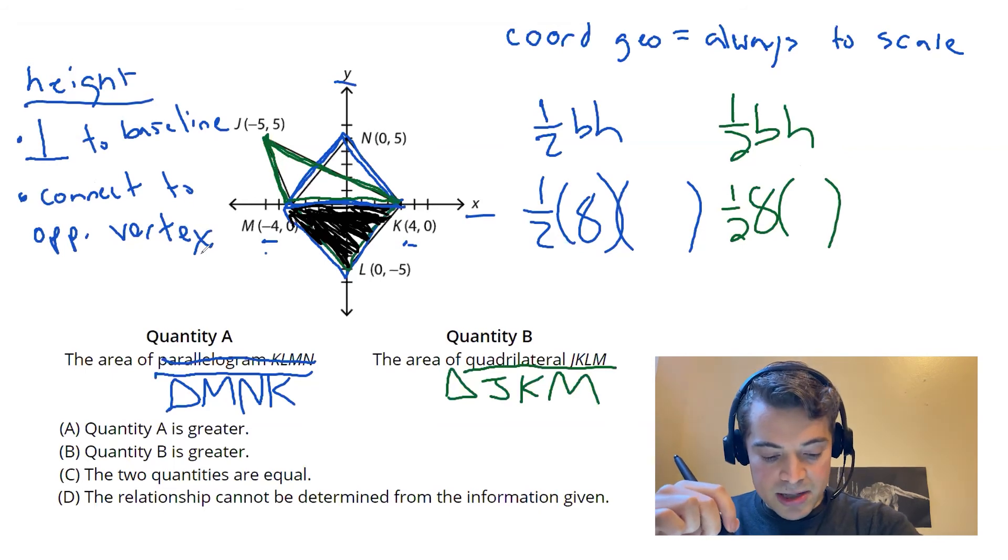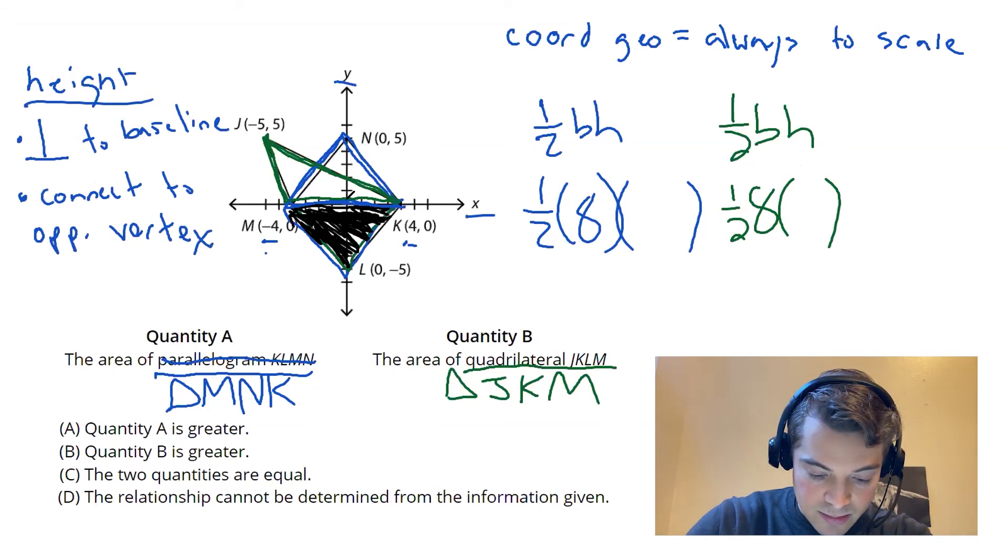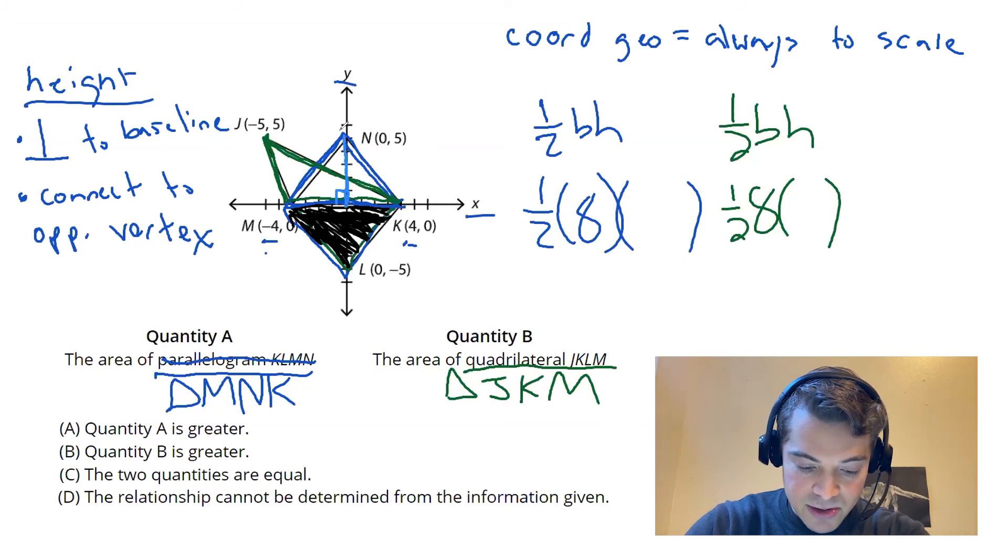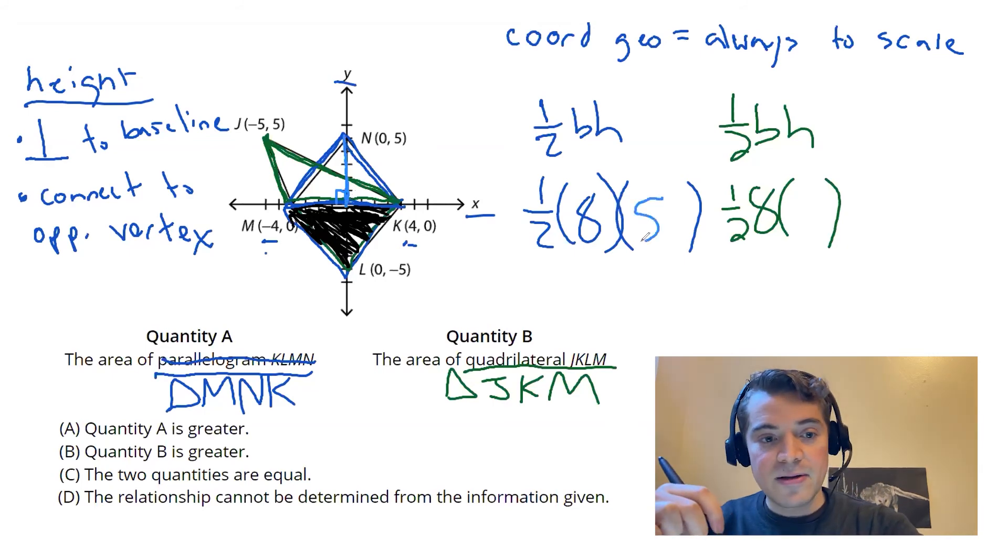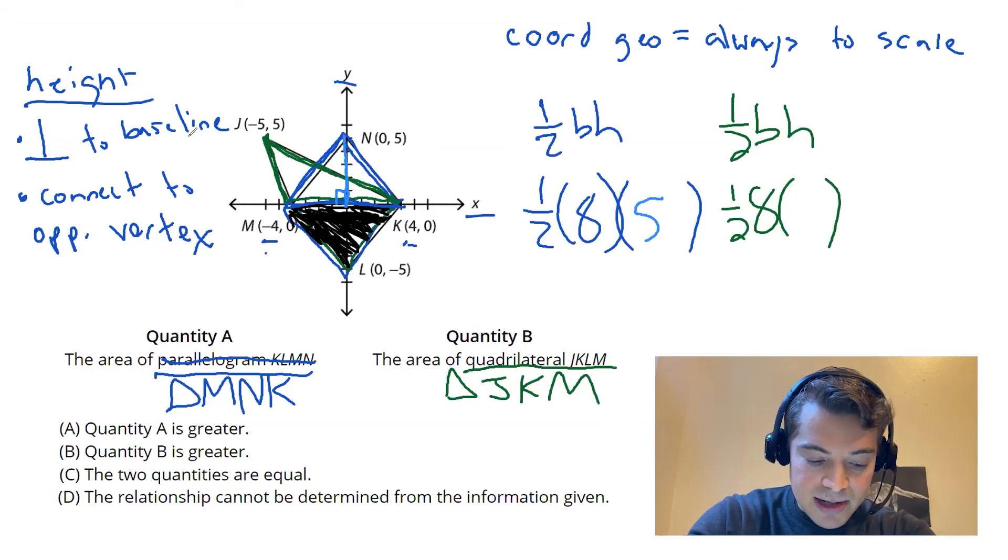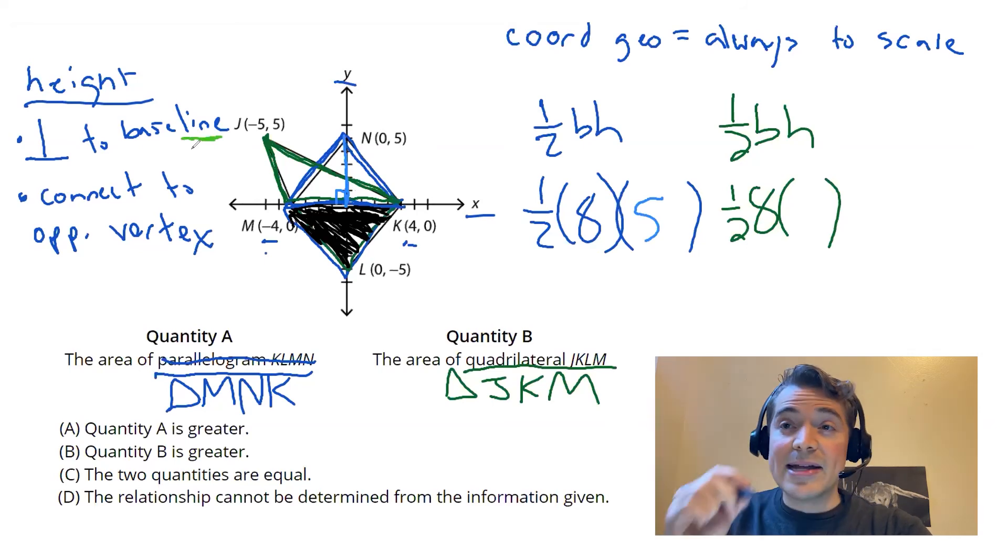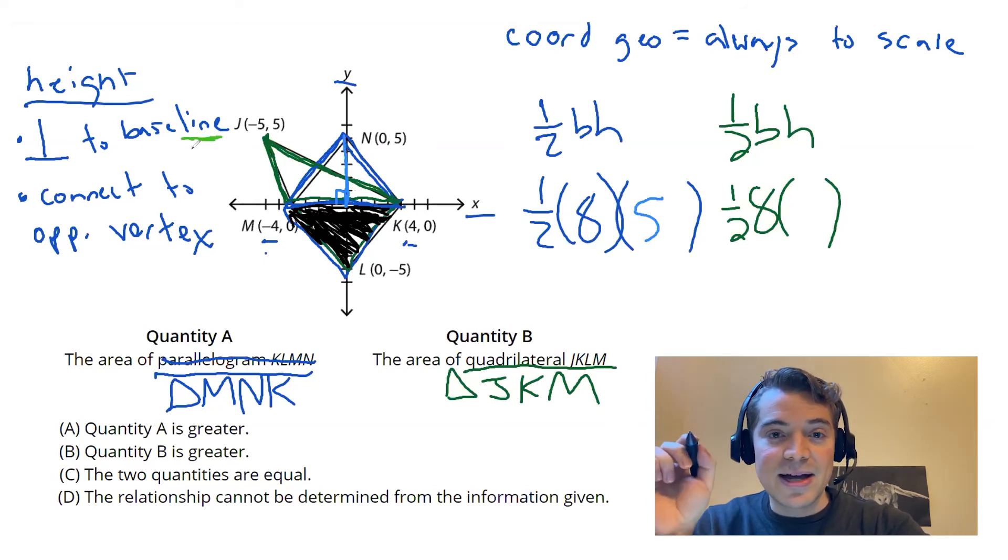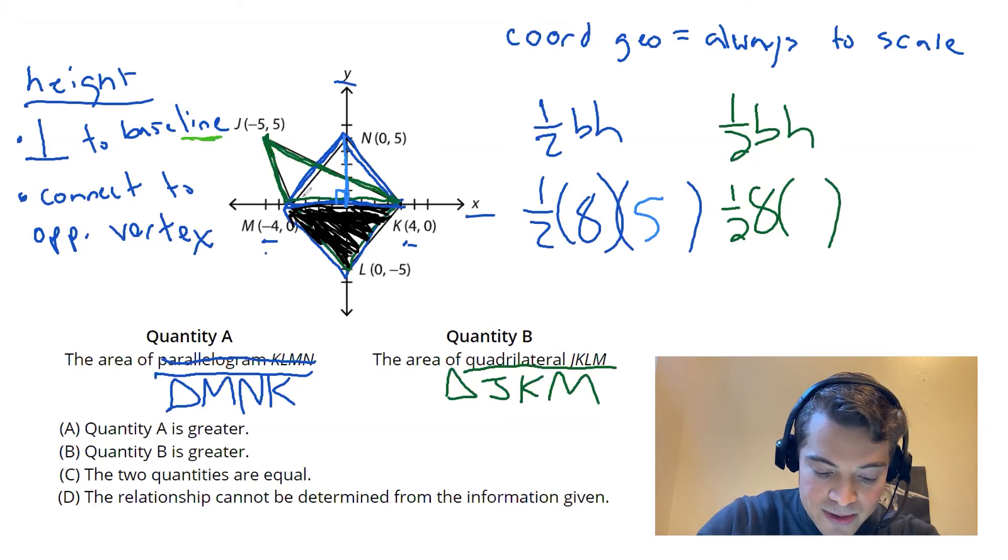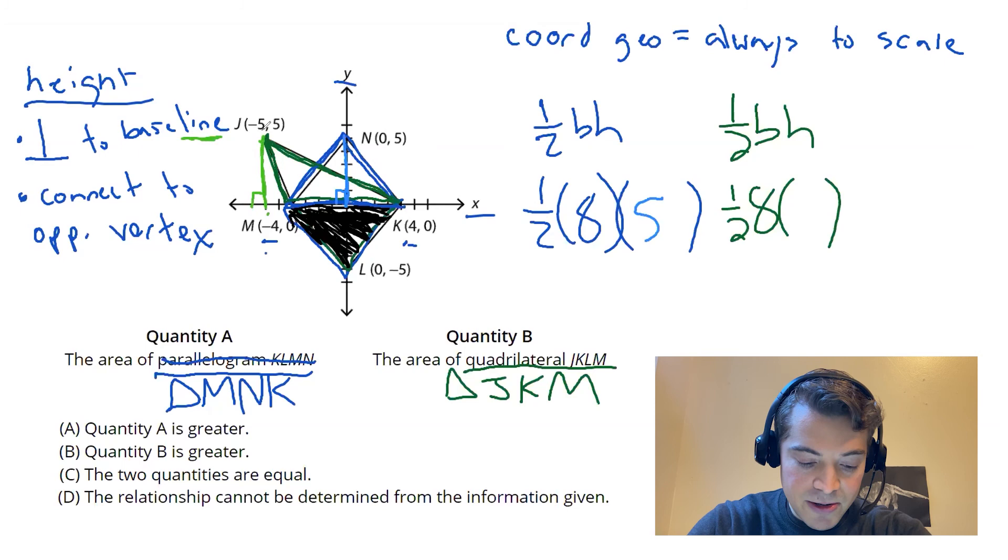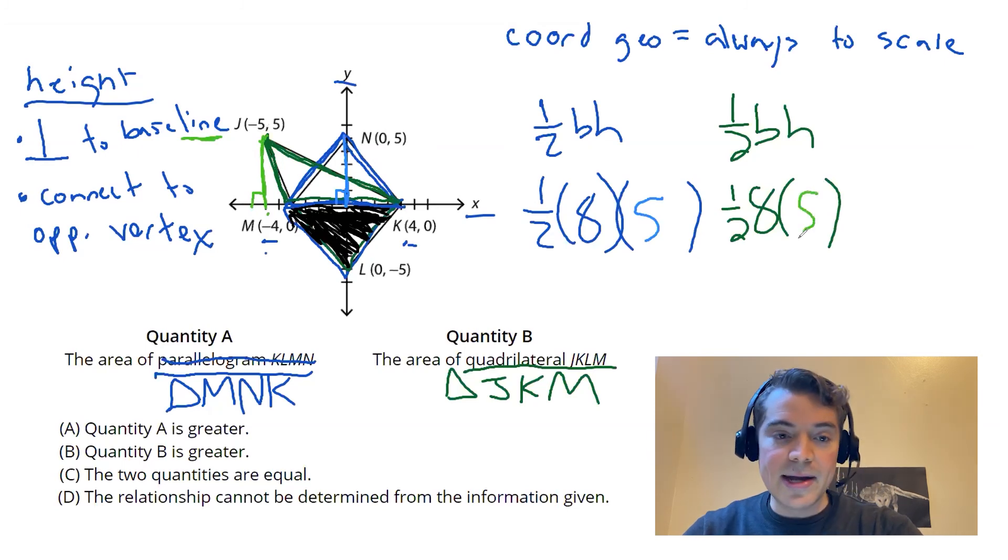So looking at these shapes here, for triangle M-N-K, my height, if I draw a line perpendicular to that baseline to the opposite vertex, that's my height right there. So I'm going from 0 to 5, that is a height of 5. For triangle J-K-M, it's a little more complex here, but notice it has to be perpendicular to the baseline. So in some triangles that actually means your height is going to lie outside of the triangle itself. So if I try and draw a line perpendicular to that base M-K, it's actually going to fall just outside of the triangle a bit. But as you can see, I'm still going from 0 up to 5, so that's also a height of 5.